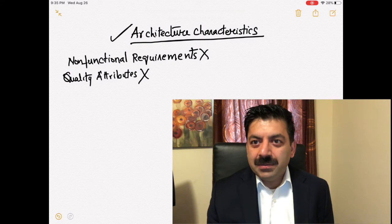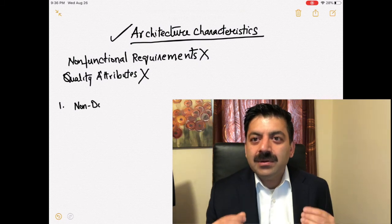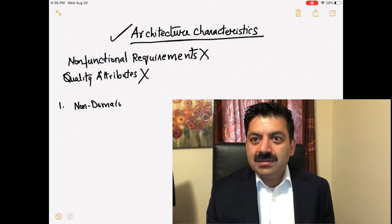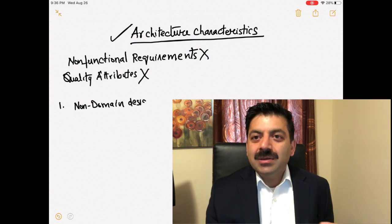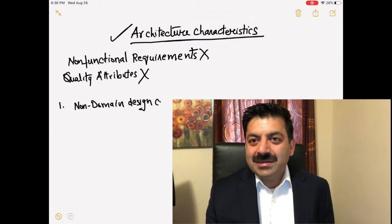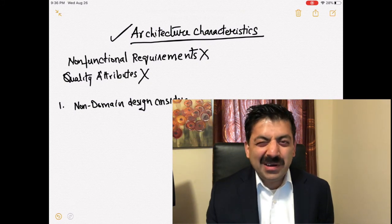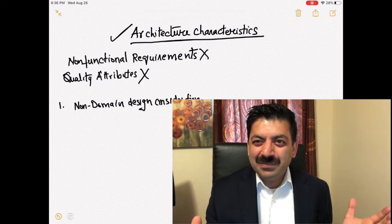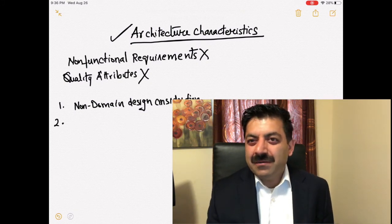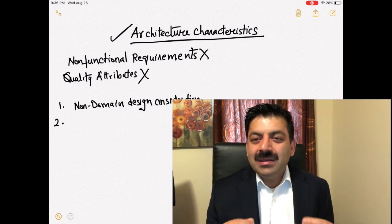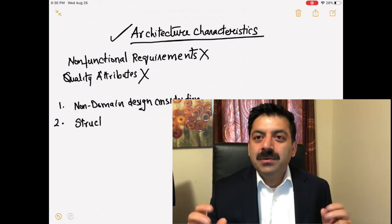These are the requirements like scalability and performance. These are not written, you don't get them as part of software requirements, but these are very essential. So they call it architectural characteristics. As I explained, non-functional requirements means they are useless, quality attributes means it's an afterthought. Performance and scalability are too important.